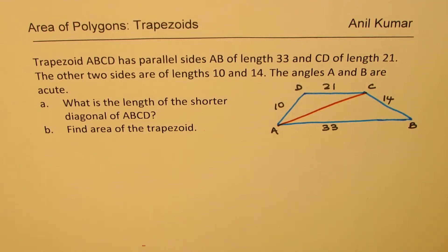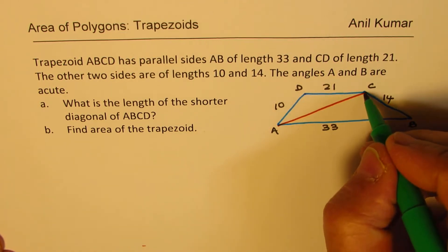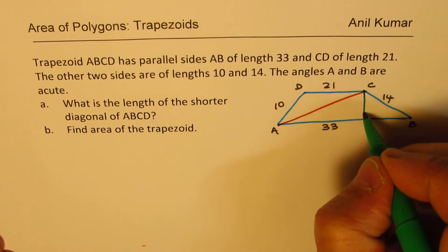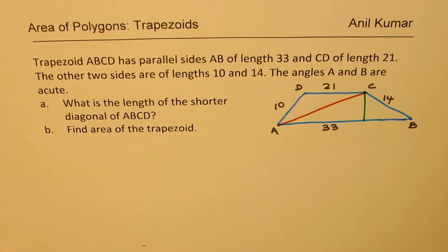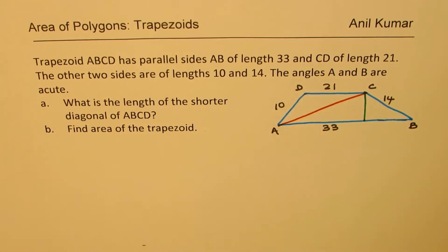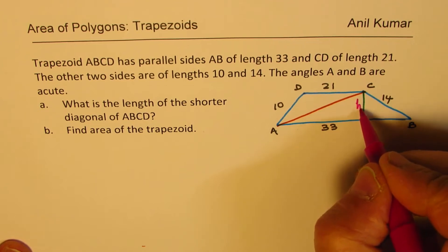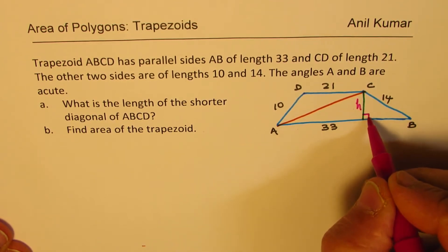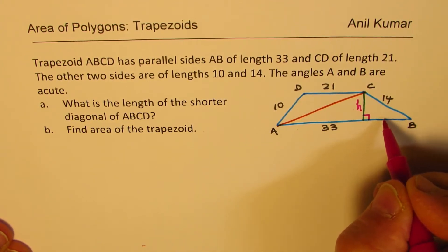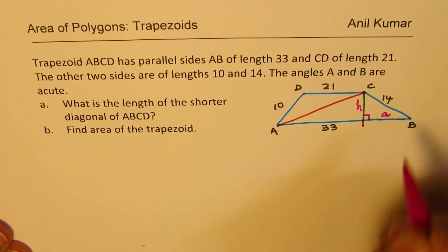To find the diagonal AC, we need to figure out the height. Let's call the height H. We can use the Pythagorean theorem if we know a horizontal segment — let's call it A.